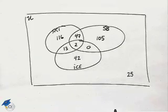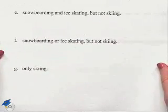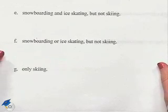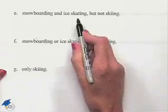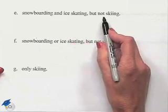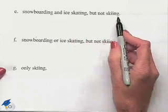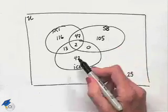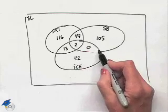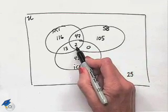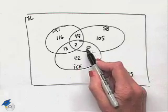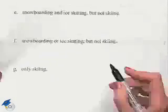The next question: how many enjoyed snowboarding and ice skating but not skiing? We want the intersection of snowboarding and ice skating but disallowing the section that also includes skiing. We can see that answer is zero.